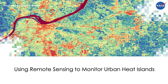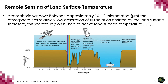We'll now pivot to focus on how remote sensing can be used to monitor urban heat islands. Urban heat islands are primarily measured by remote sensing in the thermal infrared part of the electromagnetic spectrum. Between approximately 10 to 12 micrometers, the atmosphere has relatively low absorption of infrared radiation emitted by the land surface. It is within this atmospheric window that spaceborne instruments observe the thermal infrared spectral region to derive land surface temperature. The image on this slide shows atmospheric windows where specific types of electromagnetic radiation can freely pass, as well as absorption bands where the atmosphere absorbs and scatters radiation.